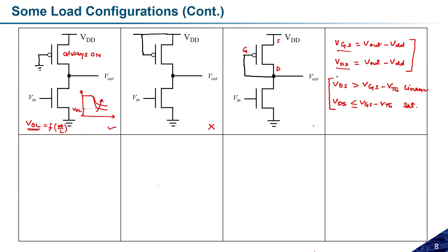So Vgs minus Vts becomes positive, and this transistor will be in the saturation region. Being in the saturation region means this device is in the on state. Now we need to check what happens based on the input status — can you tell me what the output is if Vin equals zero, and if Vin equals one?